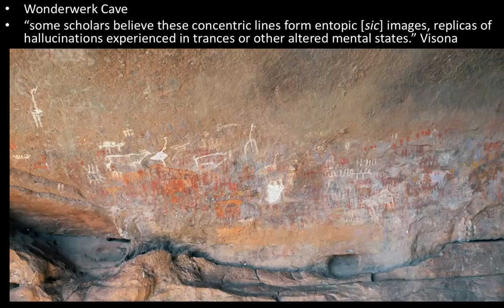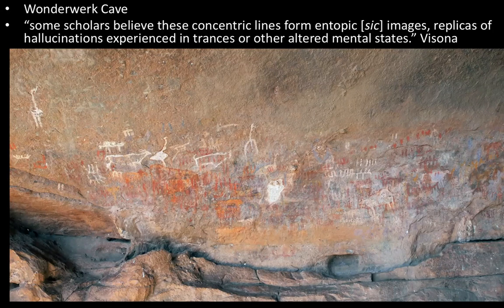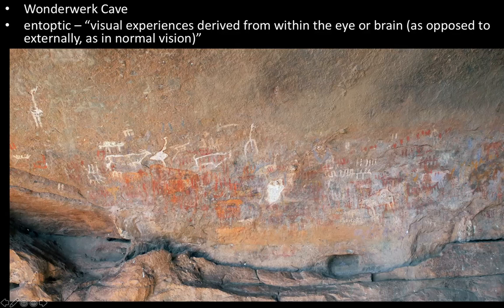Some of these pictures are rather fascinating because they involve a type of thing usually associated with psychedelic drugs. This is the Vondervoert cave. Some scholars believe these concentric lines form entoptic images — Visona is spelling 'entoptic' wrong here — replicas of hallucinations experienced in trances or other altered mental states. Entoptic means visual experiences derived from within the eye or brain as opposed to externally as in normal vision.